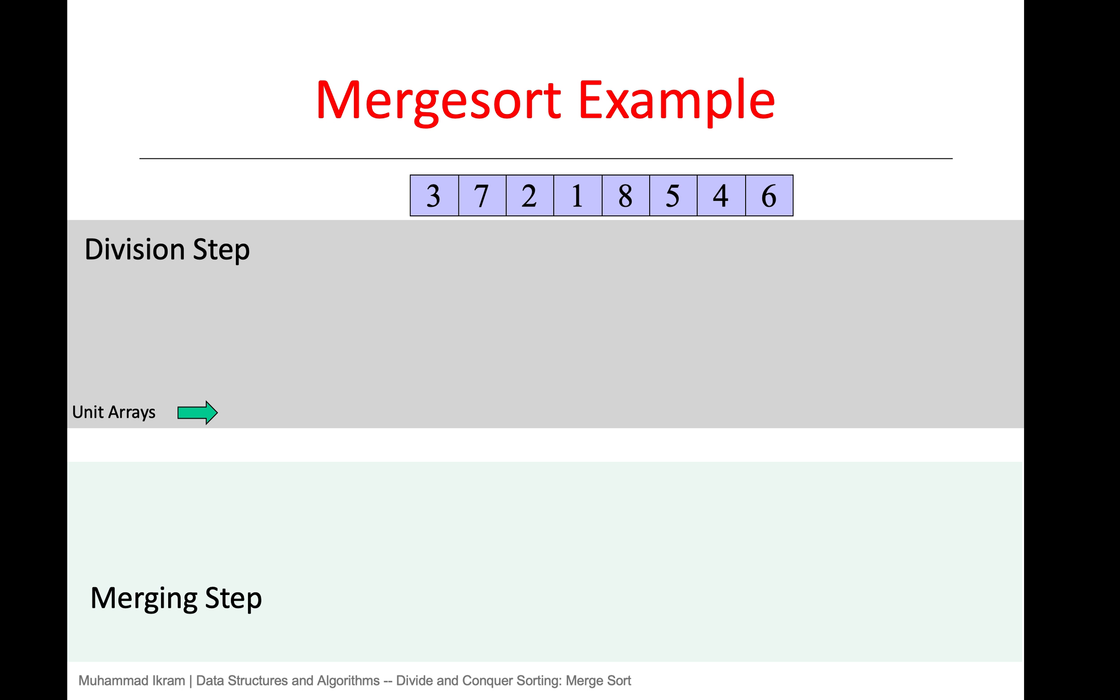Let's see how it works with an example. Here we have an unsorted array of elements 3, 7, 2, 1, 8, 5, 4, 6. The first step is to divide the array into halves at a time. We find the middle of this array to get subarrays of elements 3, 7, 2, 1 and elements 8, 5, 4, 6.